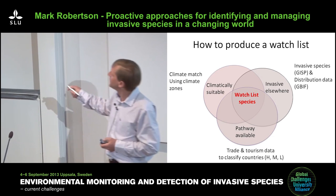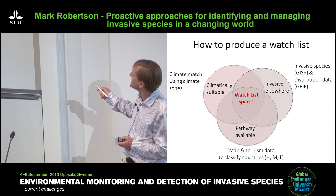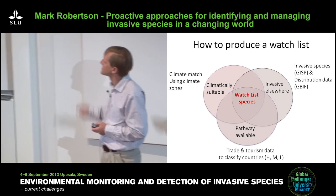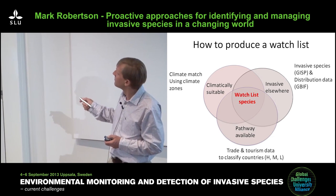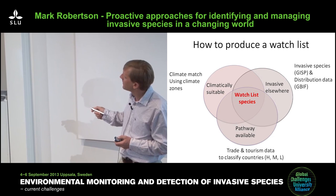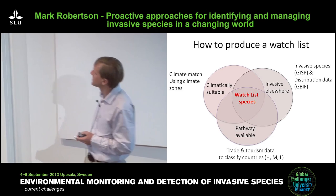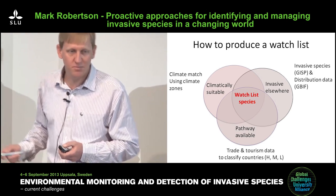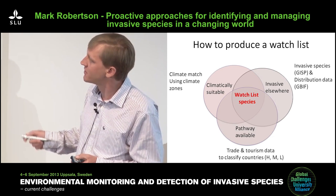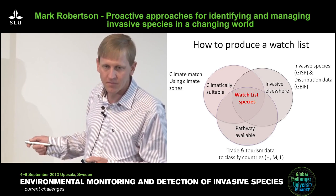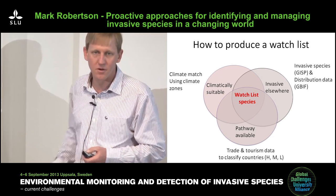The approach is rapid and easy to develop. For species invasive elsewhere, you can use the Global Invasive Species Programme's website and distribution data from GBIF. To determine climatic suitability, you can use a climate match using climate zones — a very simple approach. For pathways data, you'd need trade and tourism data for your country to determine areas of the world that represent high, medium, and low risk.